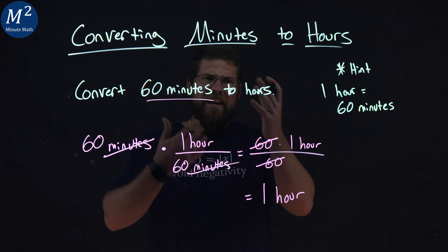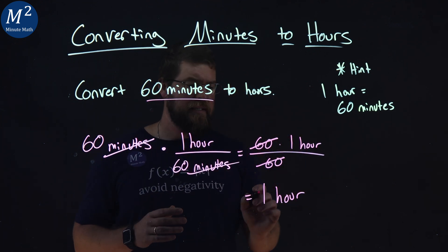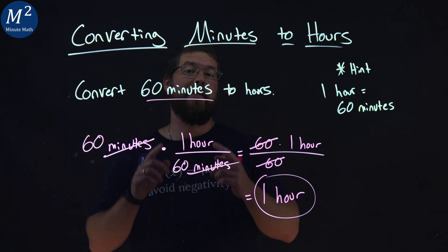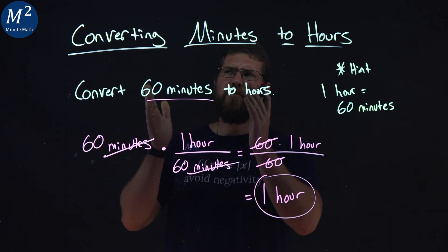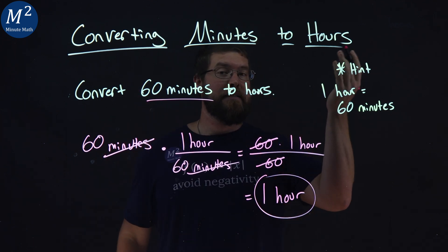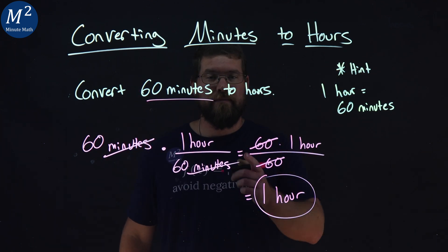And so we're left with one hour. Although it came back to itself with the hint, we followed our steps and confirmed that 60 minutes equals one hour. I hope you learned something about converting minutes to hours. And as always, thanks for watching.